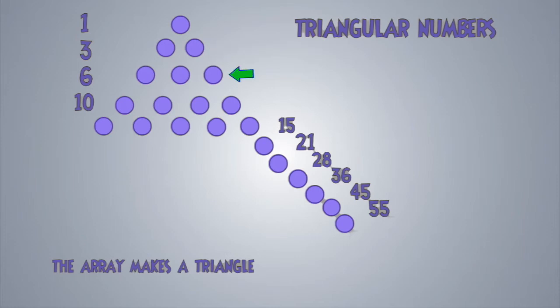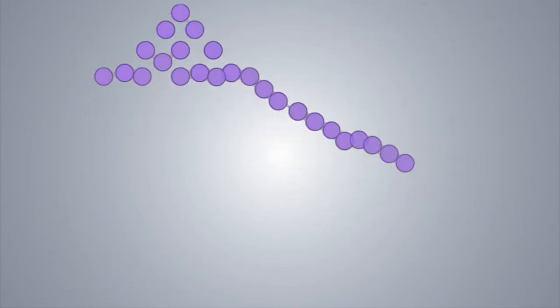Followed by 6, adding the 3 below the 2. 10, our next triangular number, adding 4 below the 3. And the array shape goes on from there.